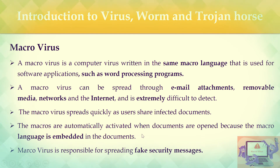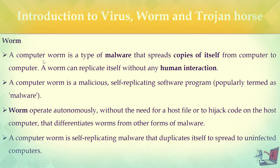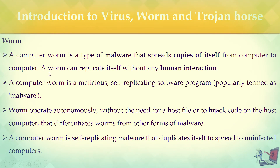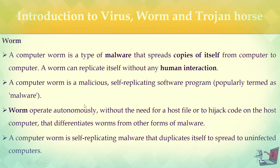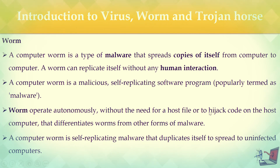What is a worm? A computer worm is a type of malware — software that affects the performance of a computer. It spreads copies of itself from computer to computer and can replicate itself without any human interaction; there is no need for a host program. A computer worm operates autonomously — unlike a virus, which needs a host, a worm does not need a host file or to hijack a host computer.